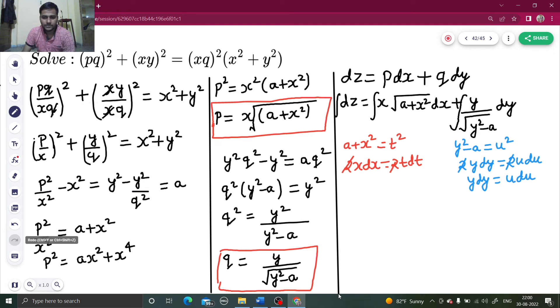Now using this, integration of dZ is simply Z equals, now if you use this value, X dX is T dT and the square root of T squared is also T, so integration of T squared dT, plus integration of Y dY is U dU.